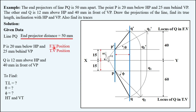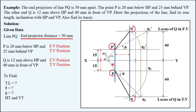The front view and top view positions are given. This question has the first quadrant as the quadrant of the line. The distances with respect to HP and VP are mentioned in the question, giving us the front view and top view positions of both endpoint P and endpoint Q.